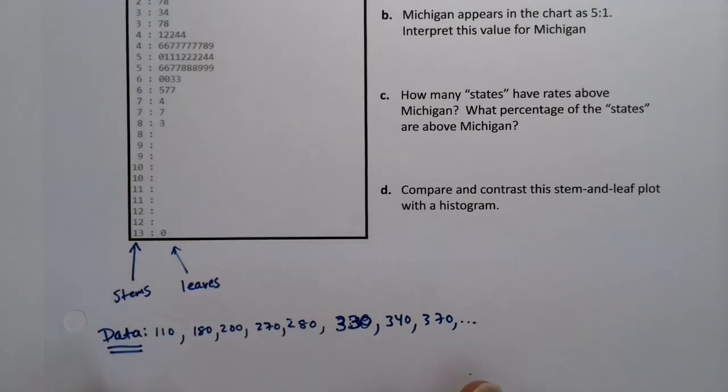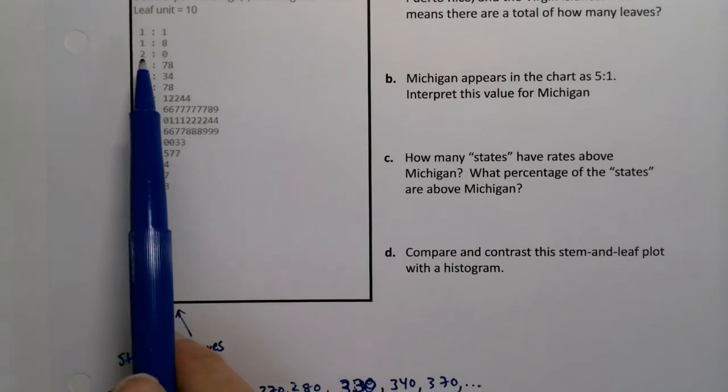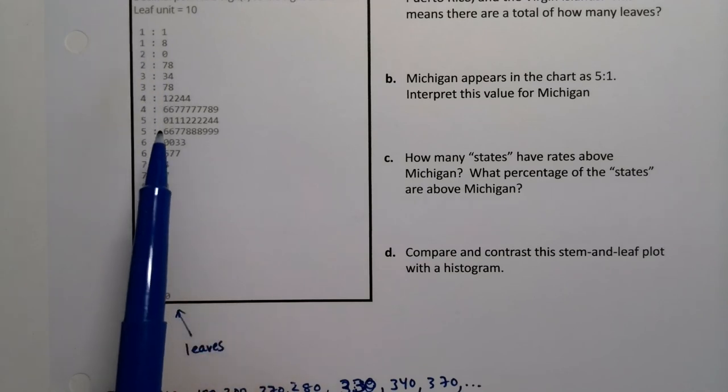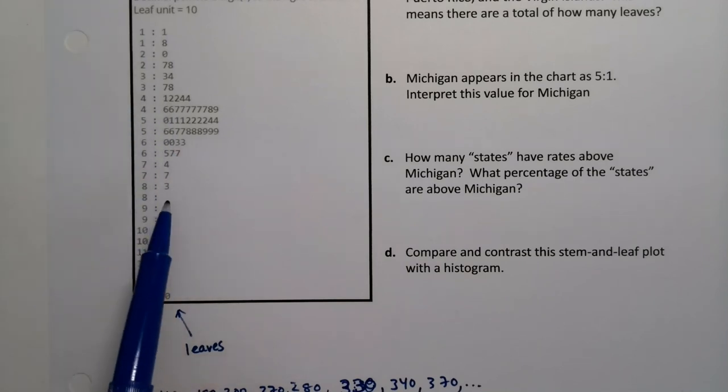Now the advantage to a stem-and-leaf plot, there's a lot of advantages. It's actually like a histogram, but it's a histogram that's built off of the number system. So you don't bin things in an arbitrary way. They're binned automatically by our number system, being binned into 40s, 50s, 60s, and so on.